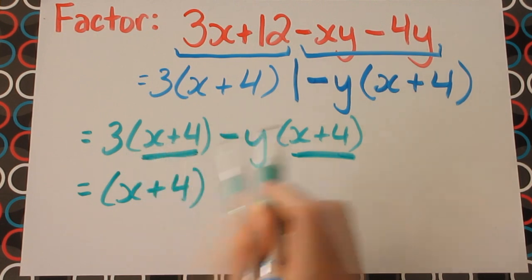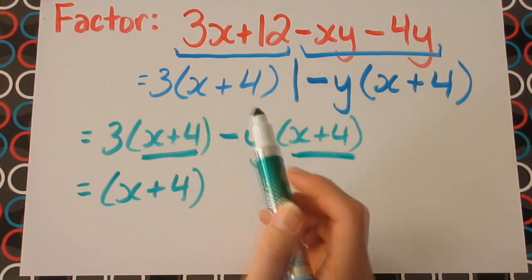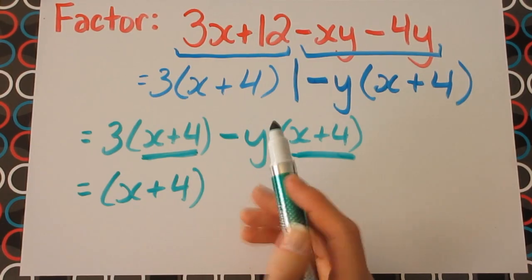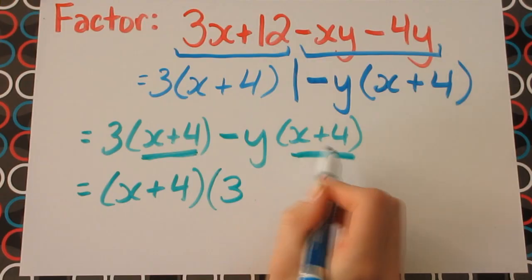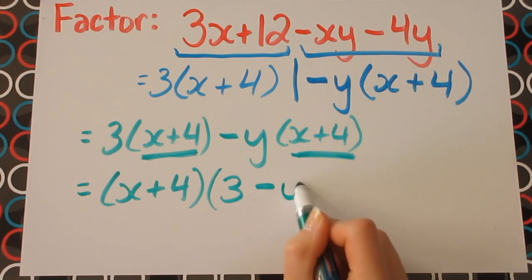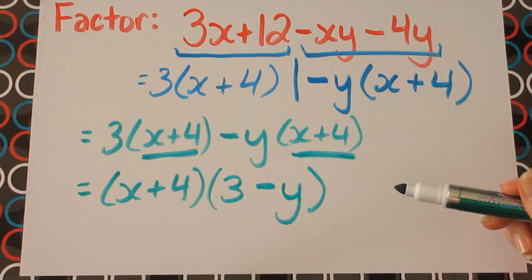So 3 multiplied by x plus 4 divided by x plus 4 will leave us with just 3. And the same goes for the second set of terms. So we're just left with a minus y. And this is our final factored answer.